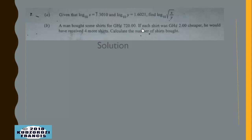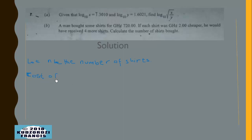Now let's look at part B. A man bought some shirts for 720 cedis. Let n be the number of shirts. If n is the number of shirts, then the cost of each shirt equals the total, which is 720, divided by n.